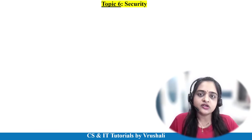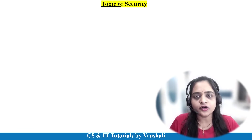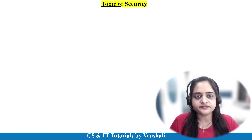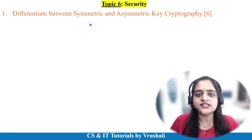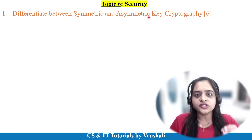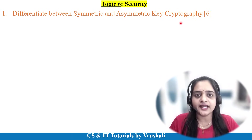The last unit is computer network security — all questions here are theoretical. The first and most important question is the difference between symmetric and asymmetric key cryptography for 6 marks. Write 6 to 7 points with a diagram and examples.